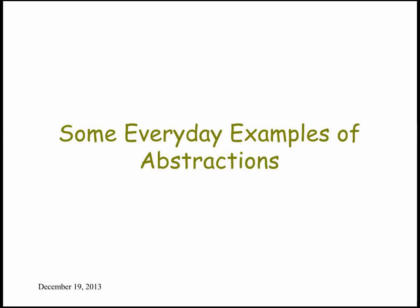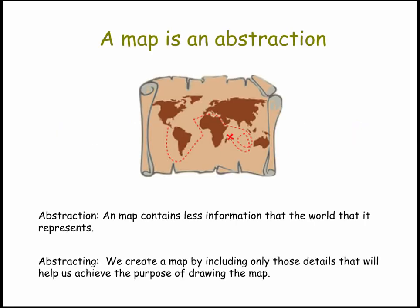Let's look at some simple examples. A map is an abstraction. A map contains less information than the world that it's representing. In this case we have a treasure map, and it's reduced the information about the world down to a simple image with an X marking the spot where the treasure is. If you think of a Google map giving directions from your home to school, it's the same sort of thing.